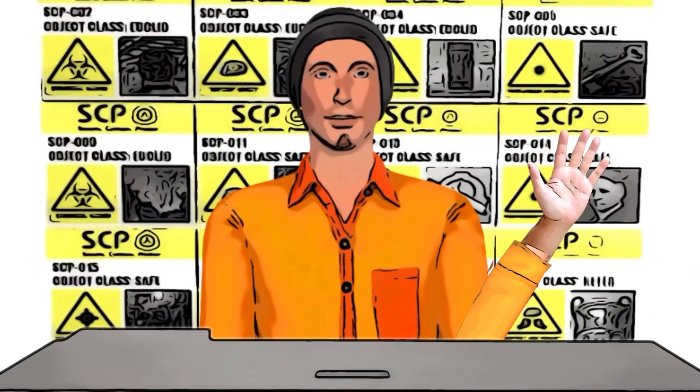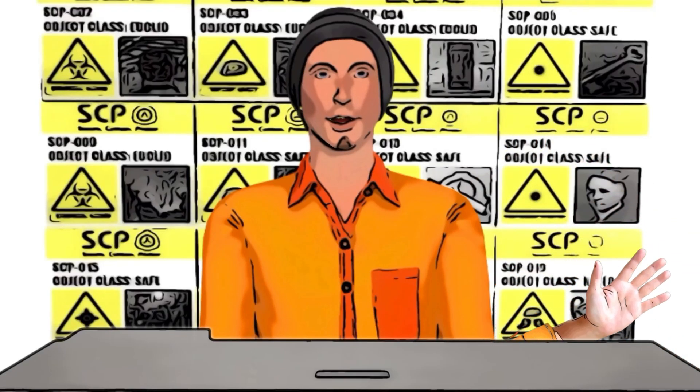Hello everyone, welcome back to our channel. In this video, we will be discussing the strange properties of an SCP object known as SCP-123, also referred to as the geodesic sphere or the miniature black hole.